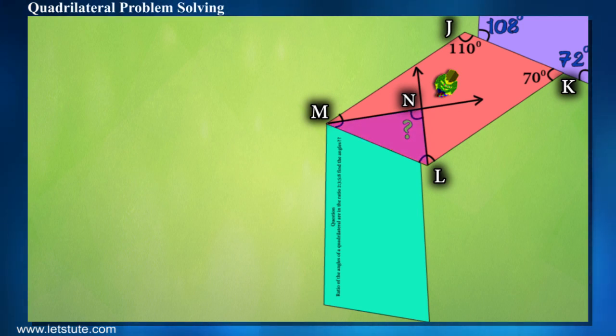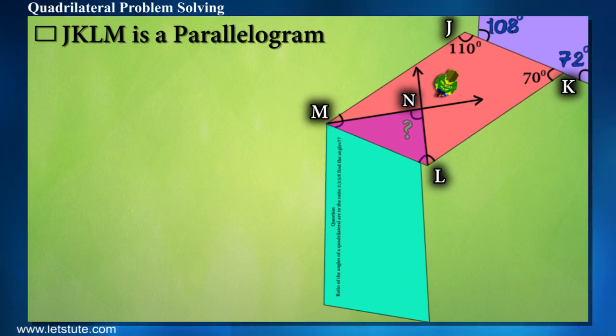Listen carefully to the given information. Block is in the shape of a parallelogram. Ray MN and LN are the angle bisectors.